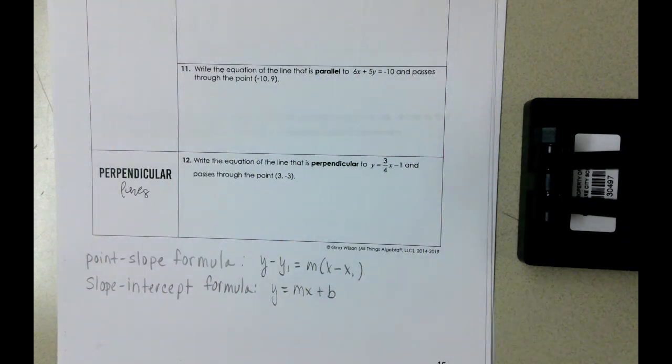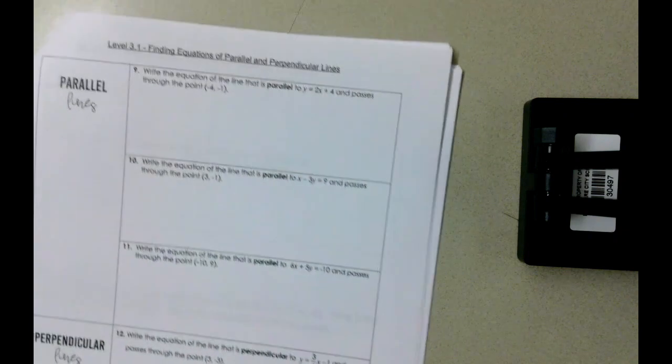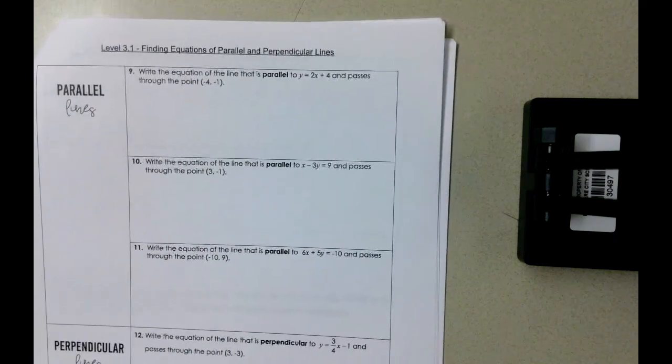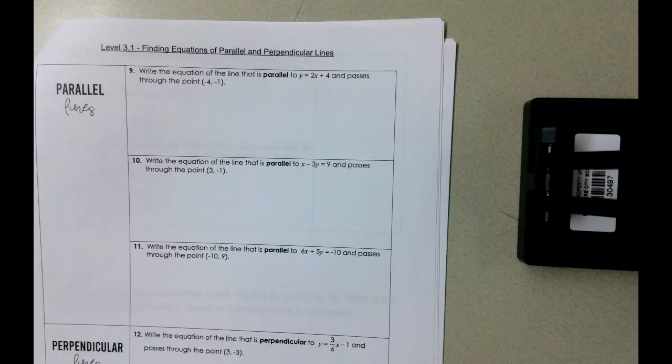So if we go back to the top of the page here and we look at these notes, write the equation of the line that is parallel to y equals 2x plus 4 and passes through the point negative 4, 1.